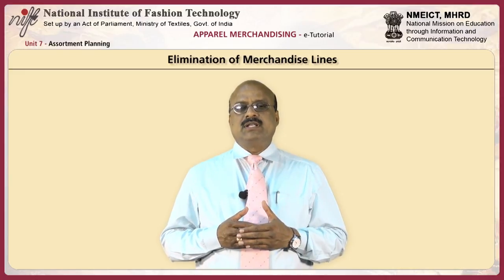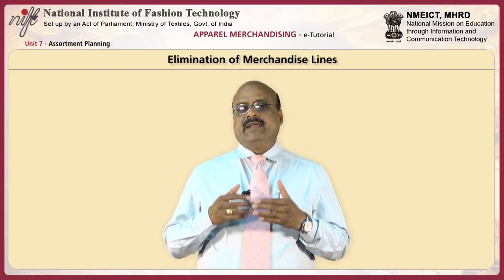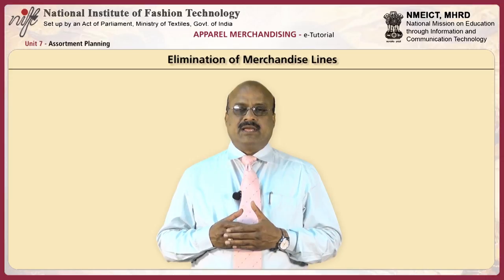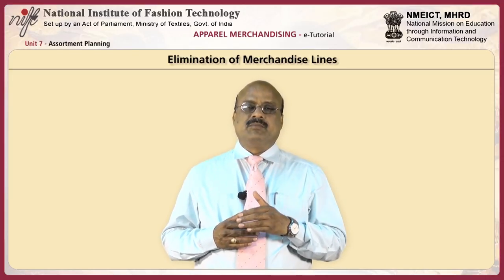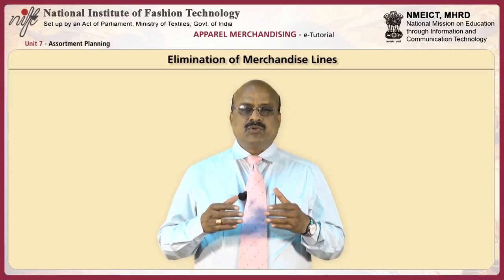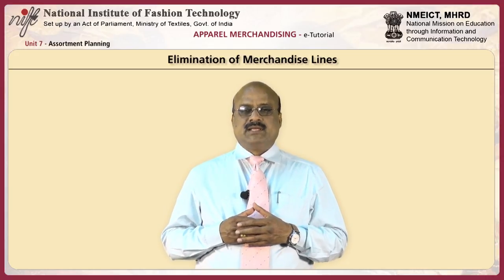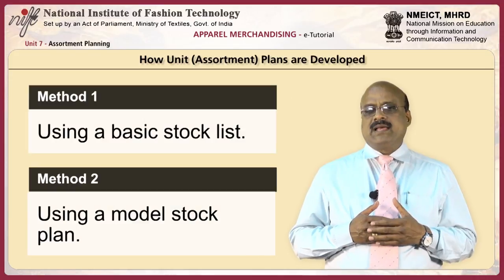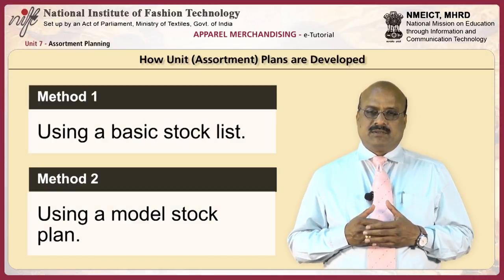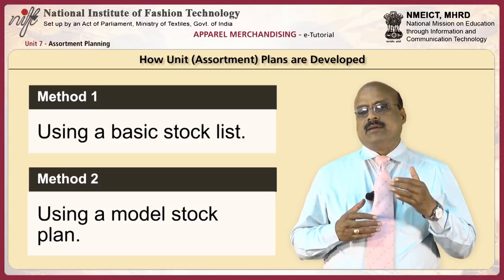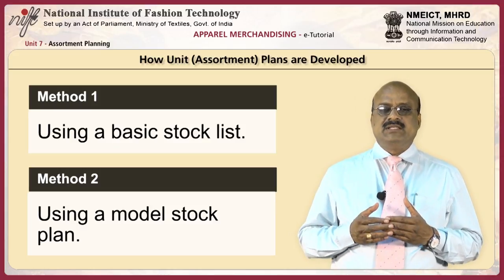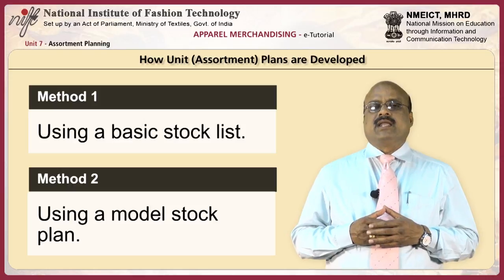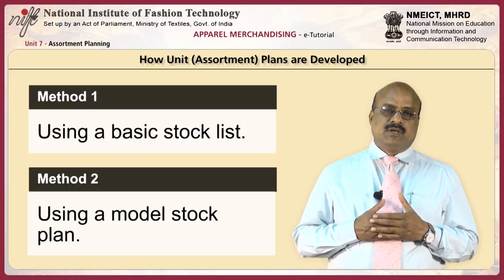The buyer must also consider whether or not the items to be dropped are fashion goods, since due to their short selling life such goods must be eliminated before they become out of style. If the goods to be dropped are staple type merchandise, they must be eliminated before they become obsolete or outdated. Assortment plans are developed in one of two ways: the first method is through use of a basic stock list, and the second method is through use of a model stock plan.